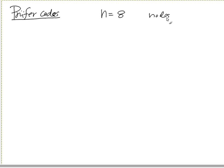The nodes are 0, 1, 2, up to 7, right? And there will be only n minus 1 edges. So the Prüfer code contains n minus 2 numbers.